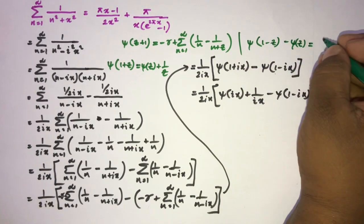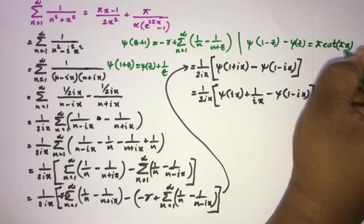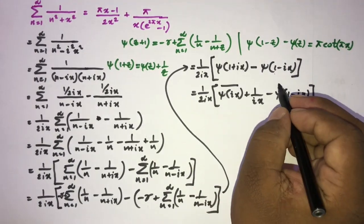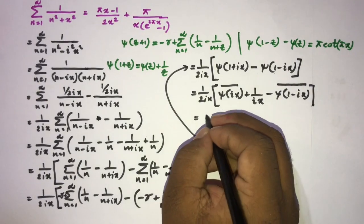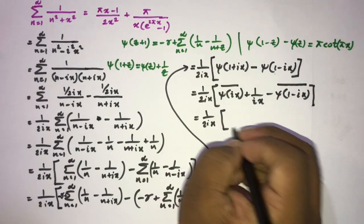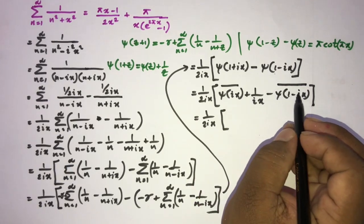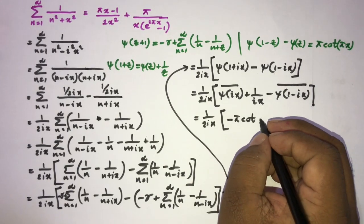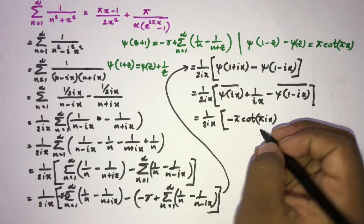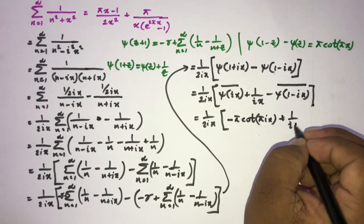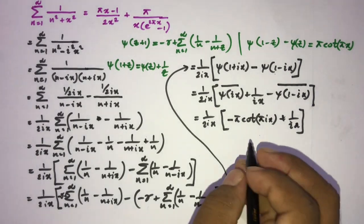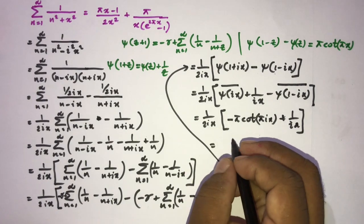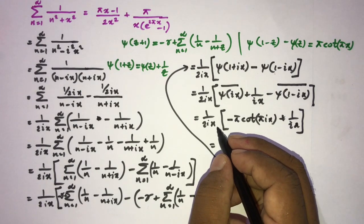We use the reflection property of the digamma function: ψ(1 − c) − ψ(c) = π · cot(πc). Applying this with c = ix, we replace ψ(ix) − ψ(1 − ix) with −π · cot(πix), giving (1/(2ix)) · [−π · cot(πix) + 1/(ix)].